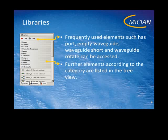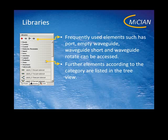Behind the second tab on the left side you find the libraries. On the top you find the most used elements such as ports, empty waveguides, short and so-called waveguide rotate. Below that you see a bunch of libraries that are bends, cavities, coaxial, dielectric resonators, import library, iris and so on.